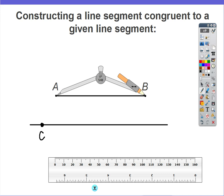Now without changing the span of the compass, I'm going to place the compass point from point A onto point C. Without changing the span, I'm then going to cross the new segment with my pencil to create an arc.